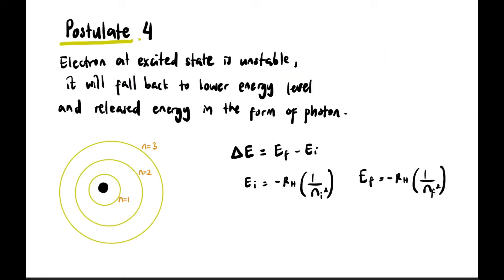Last but not least, Postulate 4: The electron at excited state is unstable, so eventually it will fall back to a lower energy level and release energy in the form of a photon. A photon is energy in the form of light. The electron will fall back, but not necessarily to the ground state - it could fall from 3 to 2, or 3 to 1, or 2 to 1, depending on its initial and final states. We can calculate the energy released using delta E equals energy final minus energy initial.